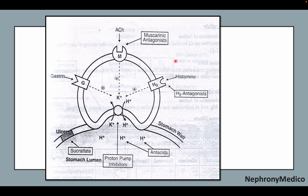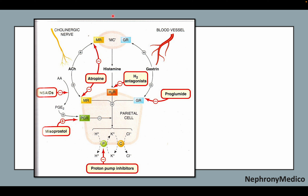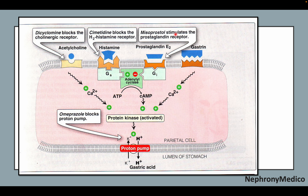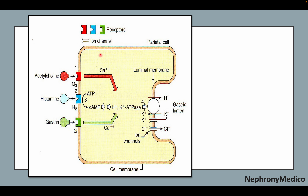This is a picture showing the mechanism of action of different kinds of drugs, including sucralfate, proton pump inhibitors, antacids, H2 antagonists, and others. Another picture shows the mechanism of action on the parietal cell for different drugs. A further picture shows the molecular-level mechanism of action of Cimetidine, misoprostol, omeprazole, and dicyclomine. Another picture shows the mechanism of action at the cellular membrane level.